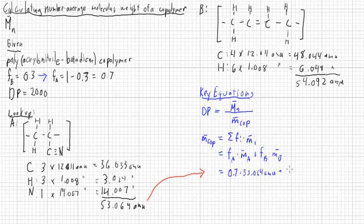And I add to it 0.3, which is the fraction we had here, and multiply it by 54.092 AMU. And we got that from here.